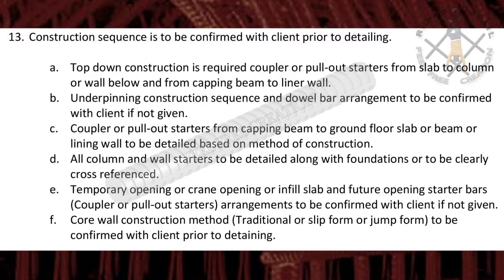Point 13. Construction sequence is to be confirmed with client prior to detailing. Top-down construction requires couplers or pull-out starters from slab to column or wall below, and from capping beam to liner wall. Underpinning construction sequence and dowel bar arrangement to be confirmed with client if not given.